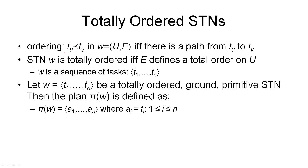To define the ordering in a task network, we say that tU comes before tV in the network W consisting of nodes U and edges E, if there is a path from tU to tV. A simple task network W is totally ordered if the set of edges defines a total order on the nodes, meaning every node is ordered with respect to every other node — there are no two nodes that are unordered with respect to each other. If this is the case, we can represent the network W as a sequence of tasks, just like we've written a sequence of actions earlier, starting with tn and ending in t1, all totally ordered with respect to each other.